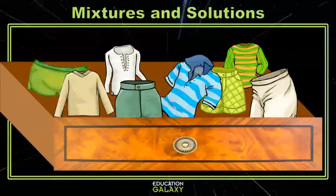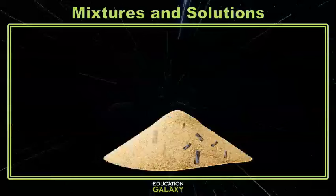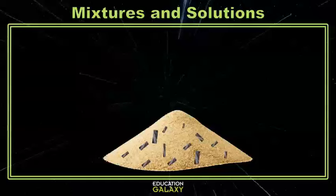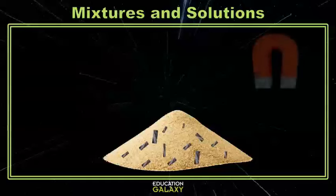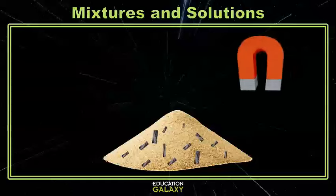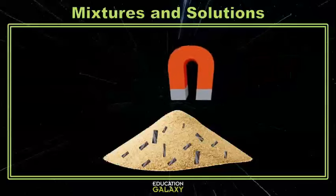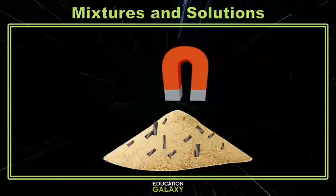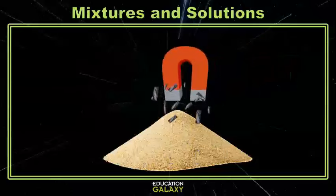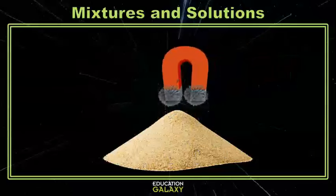Most of the time, mixtures can easily be separated. Let's say you mix sand with a bunch of iron filings. It would be really easy to separate with a large magnet. The magnet would pull out all of the iron filings and leave just the sand behind.